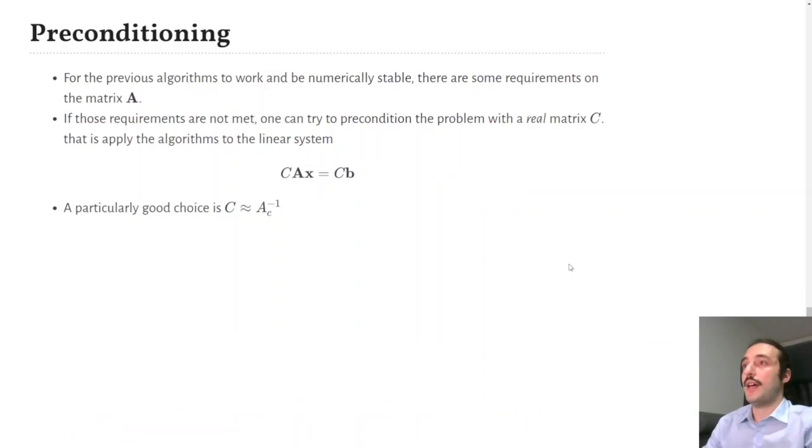And, finally, another important concept when we talk about interval linear systems is preconditioning. So, those polynomial time algorithms, which I mentioned before, work only under some assumptions on the matrix A. And if A doesn't fulfill those assumptions, what we can try to do is to precondition the problem. So, multiply both sides of the equation by a real matrix C, so that CA will fulfill those assumptions. And a particularly good choice, which works in most cases, is to choose C to be the inverse of the midpoint matrix.